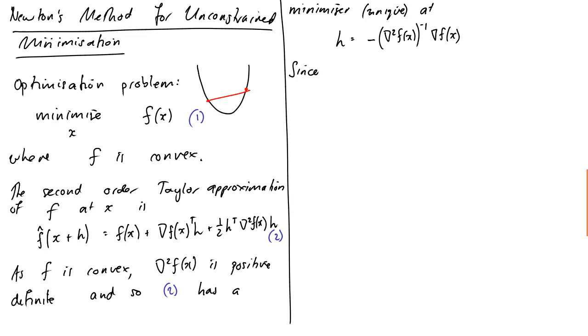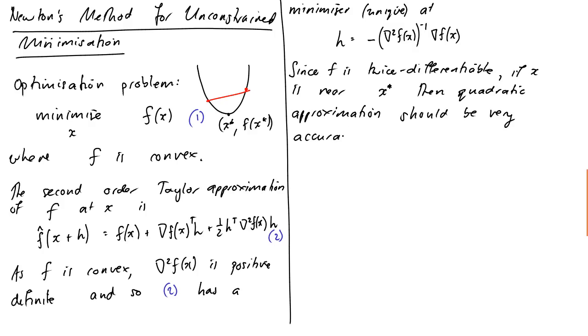Okay, since f is twice differentiable, that just means we can take second derivatives, basically. If x is near our global optimum, this is x star f of x star. Then our quadratic, then the quadratic approximation should be very accurate. And x plus h should be a good estimate of x star.